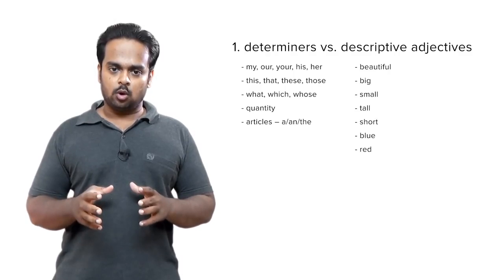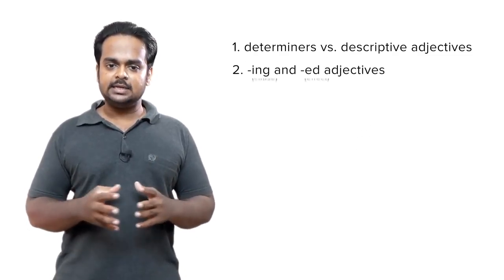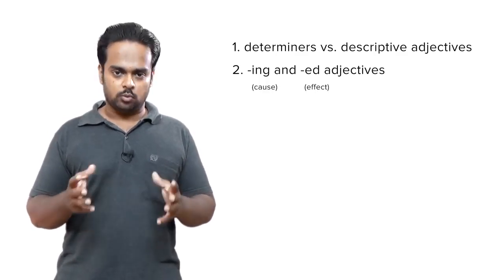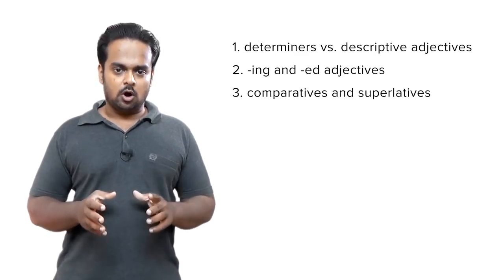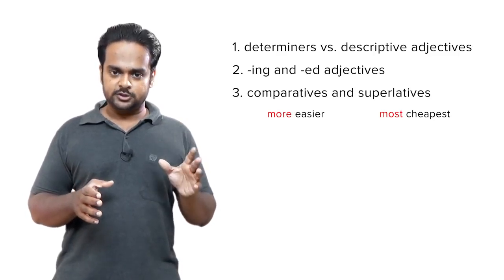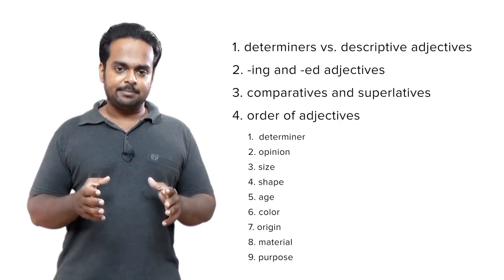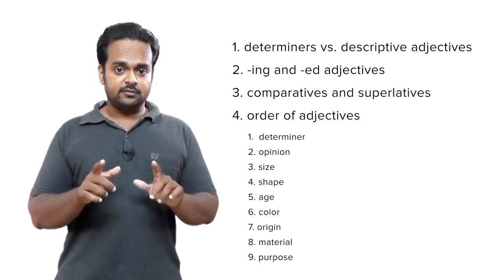OK, before we finish this lesson, let's do a quick recap of what we've learned. We first learned about the two main types of adjectives: determiners, which are a group of grammar words that act as adjectives, and descriptive adjectives, what we can think of as the real adjectives. Then we looked at ed and ing adjectives — remember that ing adjectives show cause or reason, and ed adjectives show effect or result. Then we turned to comparatives and superlatives — the common errors are using ER forms with 'more' and EST forms with 'most.' And finally, we learned the order of adjectives: determiner, opinion, size, shape, age, color, origin, material, and purpose. The error is to mix up this order, so it's a good idea to memorize it.